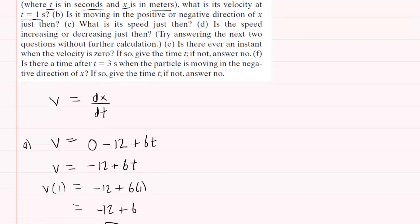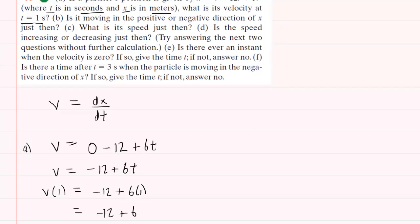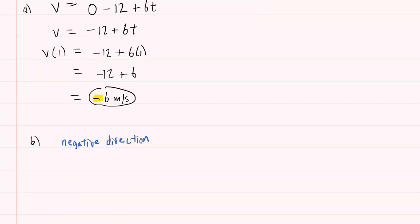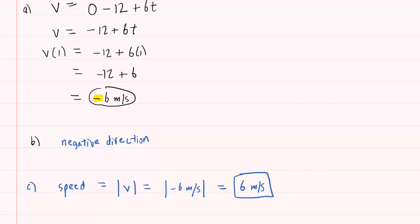On to part C, which asks: what is its speed just then? That's going to be relatively easy because speed is equal to the absolute value of the velocity. At time 1 second, we determined the velocity to be negative 6 meters per second. So we simply compute the absolute value of negative 6 meters per second, which turns out to be positive 6 meters per second. So this is the correct speed and the correct answer to part C.